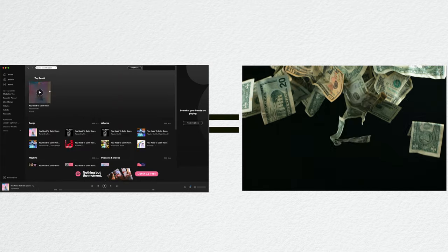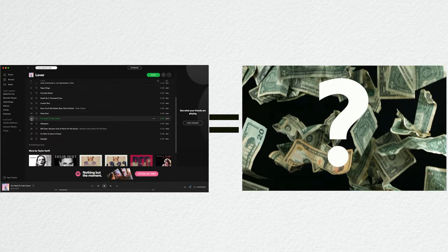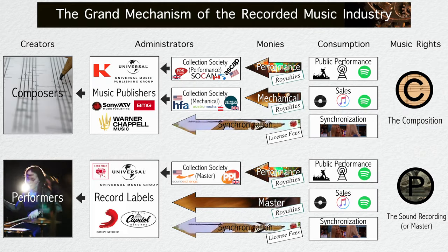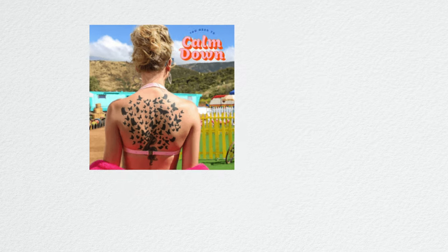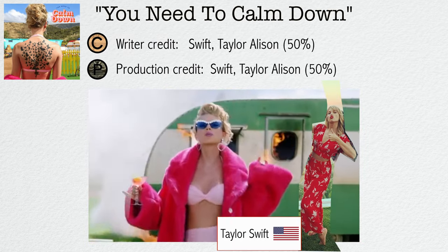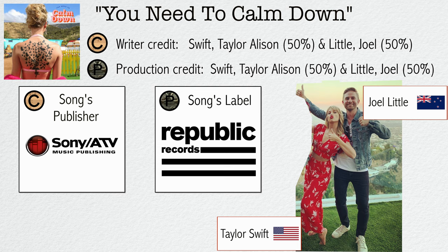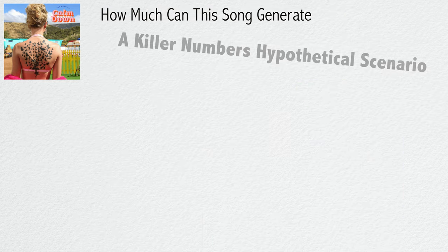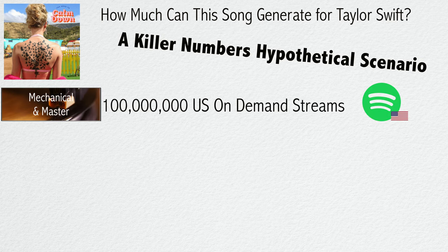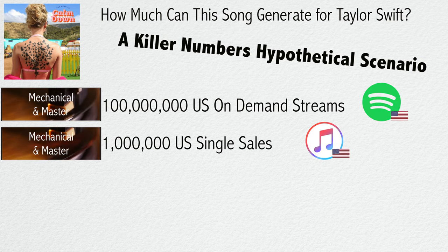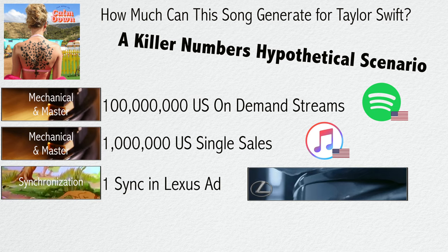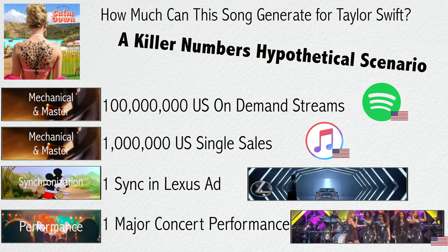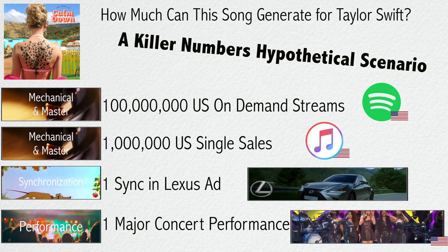Let's go back to the first question: how much does Taylor Swift make from one Spotify listen? Let me illustrate this with the grand mechanism of the recorded music industry. As an example, we'll look at Taylor Swift's song "You Need to Calm Down," written and produced by Taylor Swift and Joel Little with a 50-50 even split. Let's assume some killer numbers: 100 million on-demand US streams on Spotify, 1 million US single sales on iTunes, a placement in a killer Lexus ad, and Taylor Swift performing the song at Madison Square Garden during one of her headline sold-out shows.